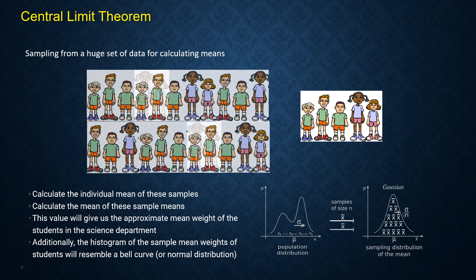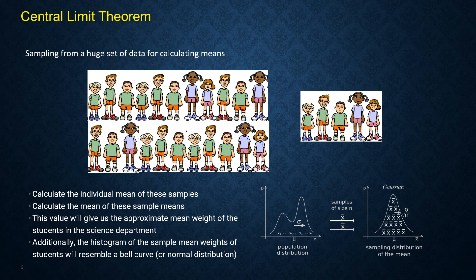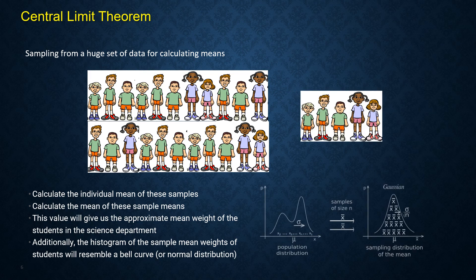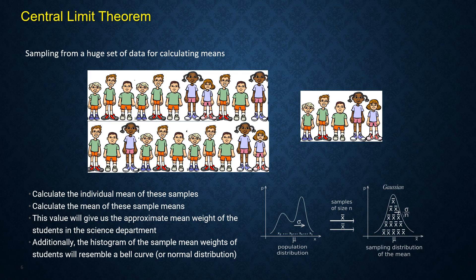For example, look at the average weight of students of a school distribution. By dividing them into smaller groups for sampling and calculating the means, the graph produced will be a normal distribution.